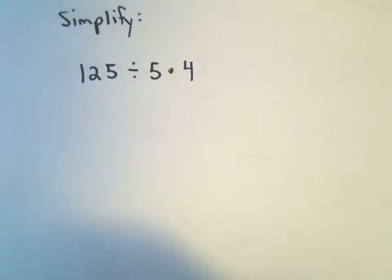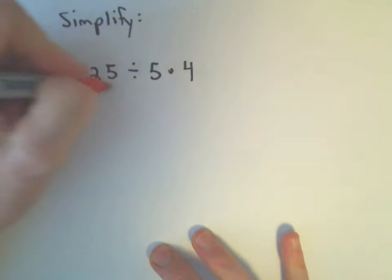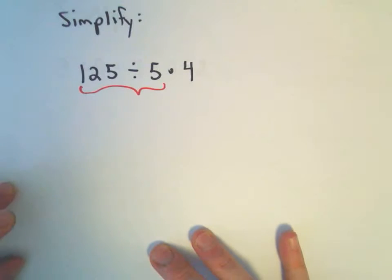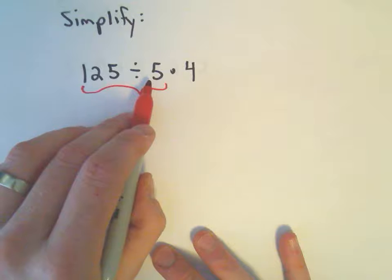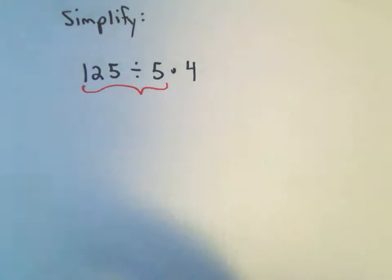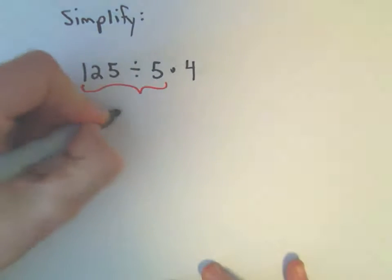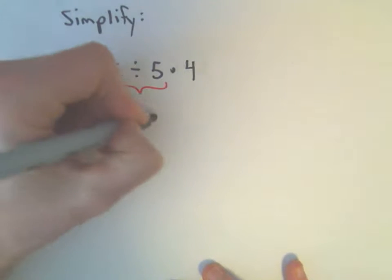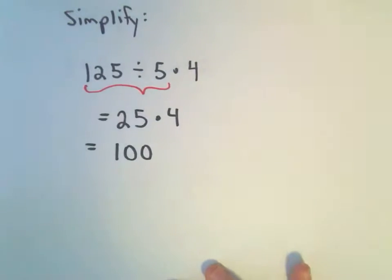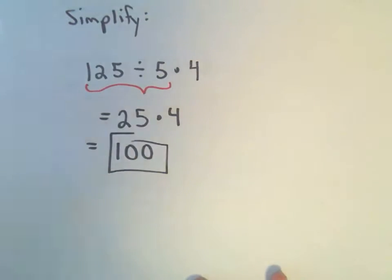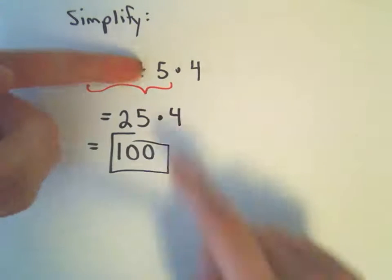So I say, well they've got equal priority. I'm going to do the 125 divided by 5 first. 125 divided by 5, that leaves us with 25. And then we still have to multiply by 4. 25 times 4 will give us 100, and there is our solution.